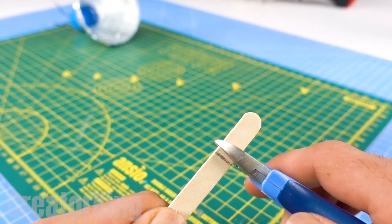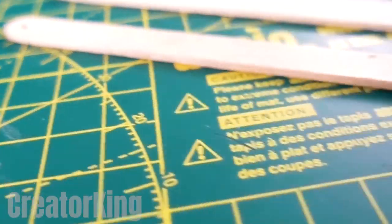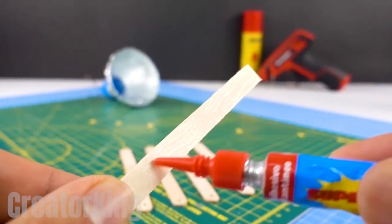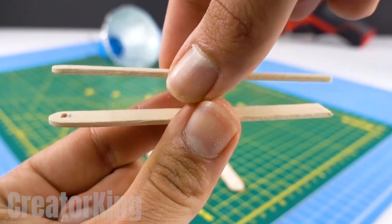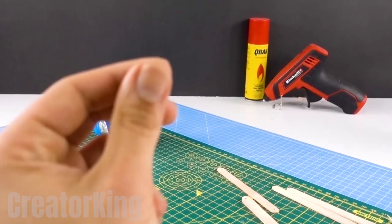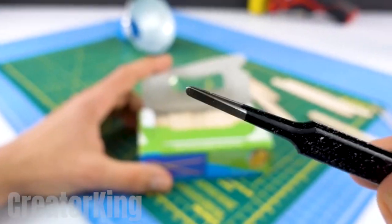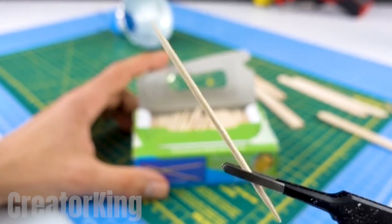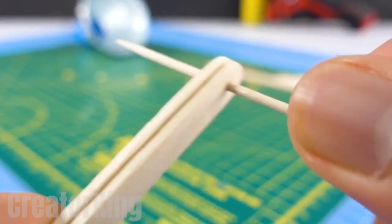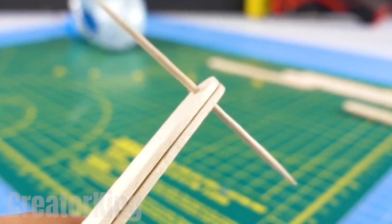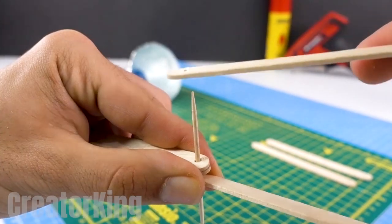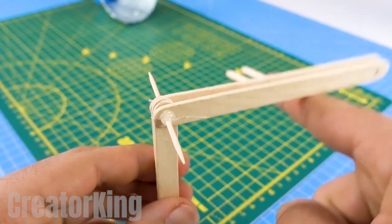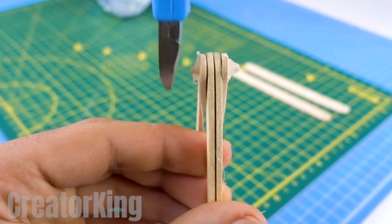With pliers, cut the end of one of the popsicle sticks, then apply super glue to attach one on top of the other. Suddenly a pair of toothpicks appears. Take one with the tweezers and put it through the hole in the glued popsicle sticks. Insert another pair of popsicle sticks on each end of the toothpick and after hot gluing them, proceed to cut the excess with pliers.